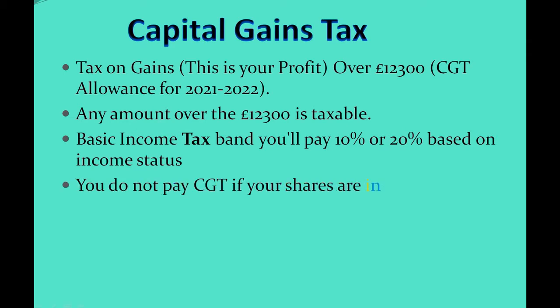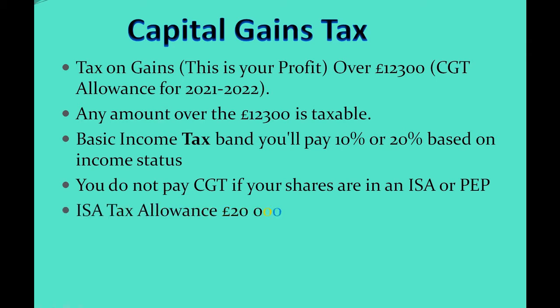If you'd like to get around paying capital gains tax, with an ISA account you don't need to pay any capital gains tax on gains made within your ISA account. In an ISA account, you can invest £20,000 per year, and this is for the tax year of 2021 to 2022.